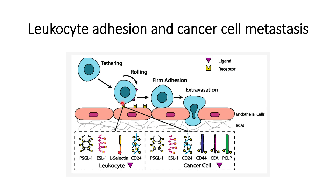P-selectin is usually expressed on leukocytes, that is white blood cells, and it binds to receptors expressed on the endothelial cells near the site of injury. One of these receptors is PSGL-1. PSGL-1 binds to receptors of the endothelial cells at the site of injury, and this causes tethering of leukocytes that are moving at a very high flow rate along with the blood in the blood vessels.